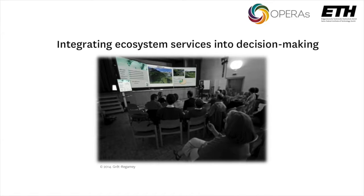You see here a decision support system. It's a participatory planning process which has been done in Switzerland. On this screen you see many different kinds of information — ecosystem services formulated as figures and graphs, but also 3D visualization. This participatory planning process was done to help people define where to put their building zones, and they can assess the impact of their building zone distribution on ecosystem services. Importantly, we don't only have information about figures and data, but also about the visual change in scenery.